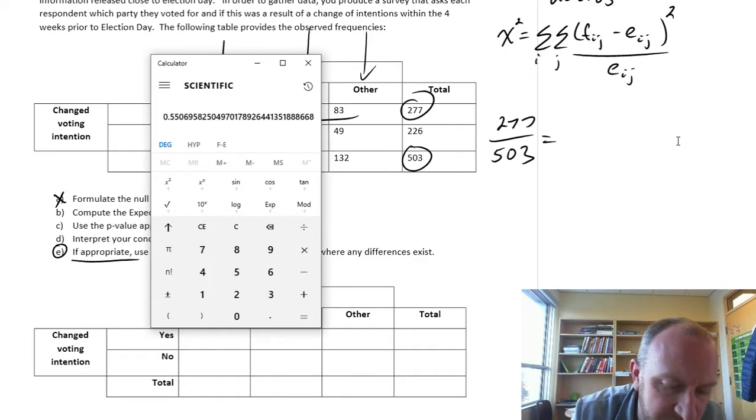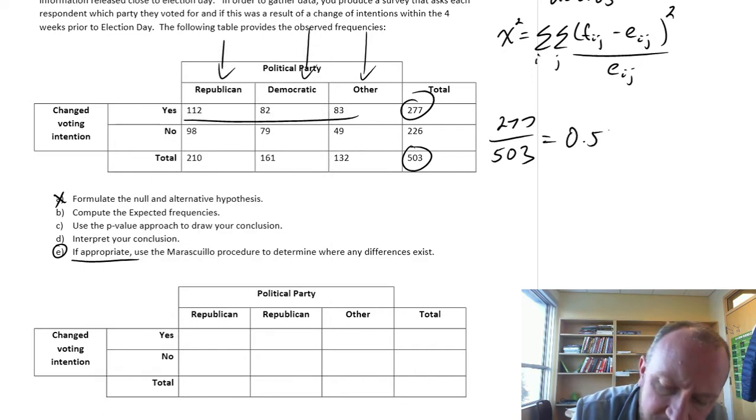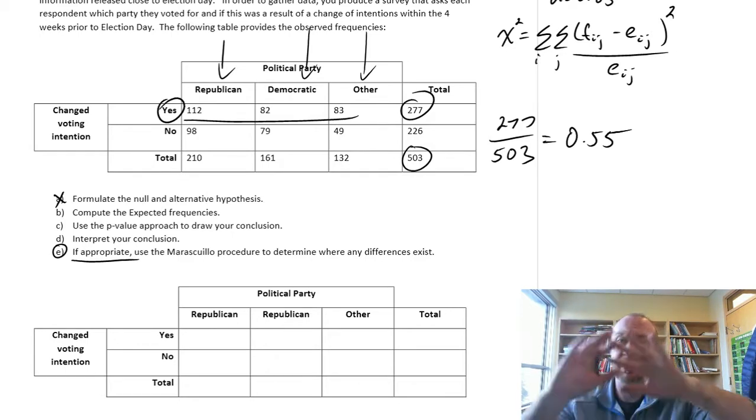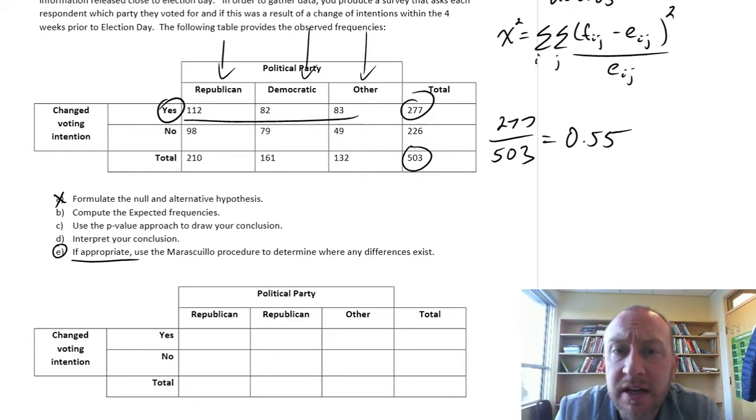So this gives us a common population proportion of 277 divided by 503. So that means 0.55. So here again, we're just looking at those who responded yes, and we're saying 55%, our proportion of 0.55, they all said yes, they changed their voting intentions within the last four weeks. And so that's regardless of which party they ended up voting for.